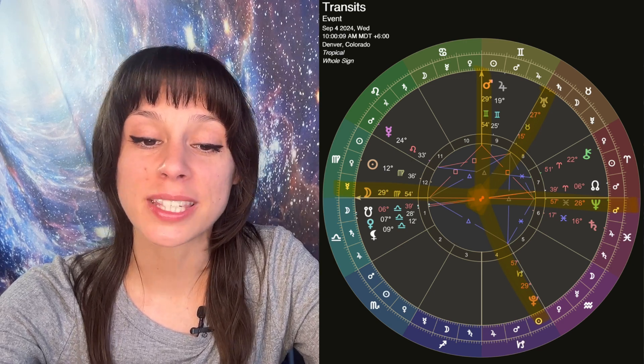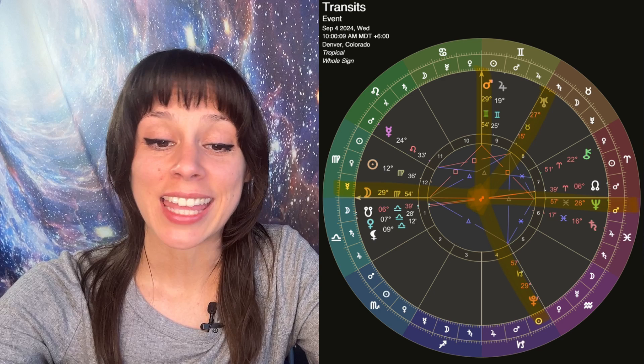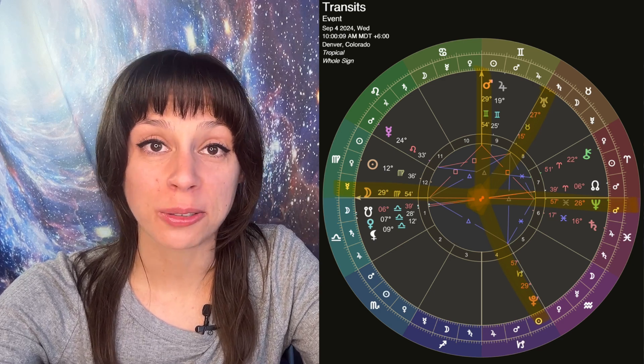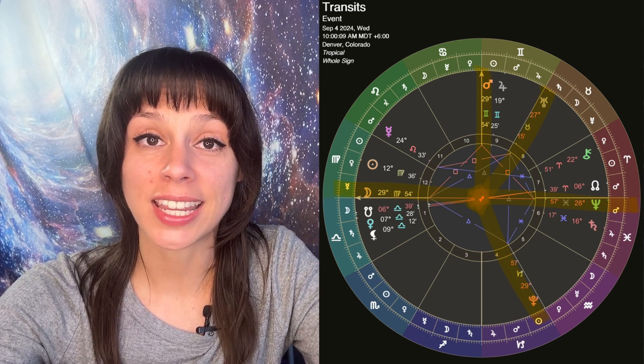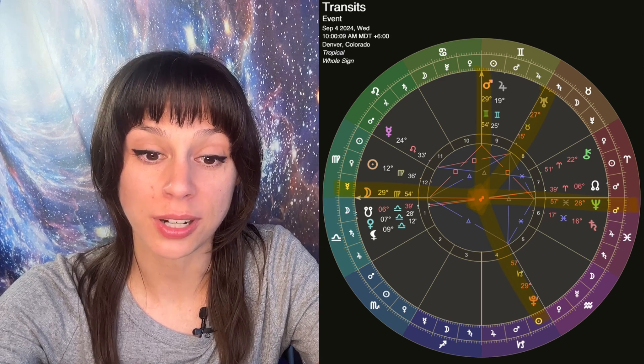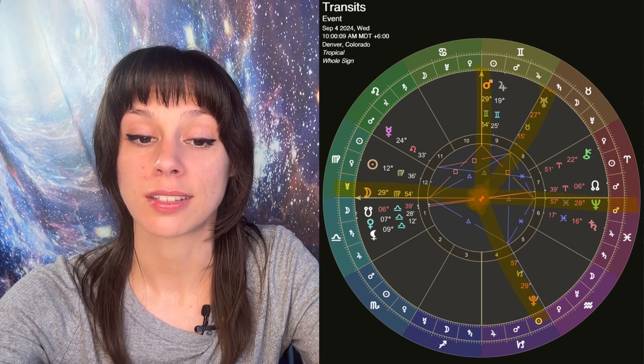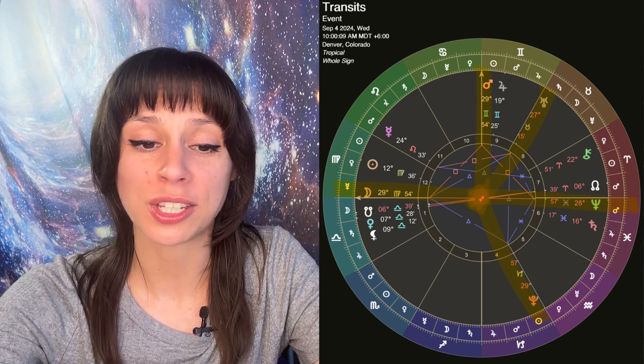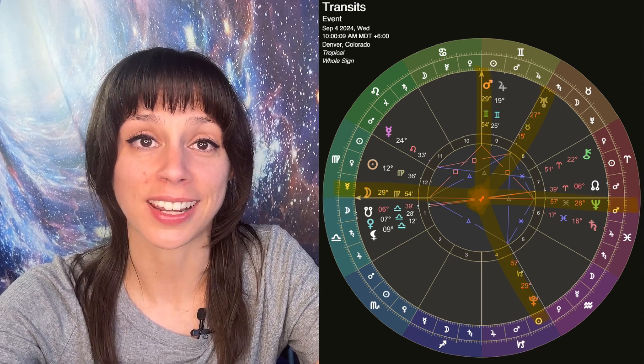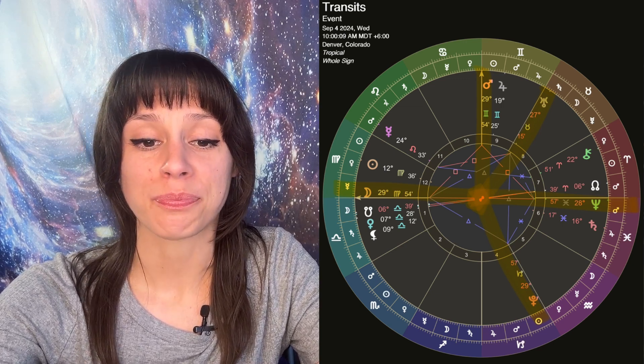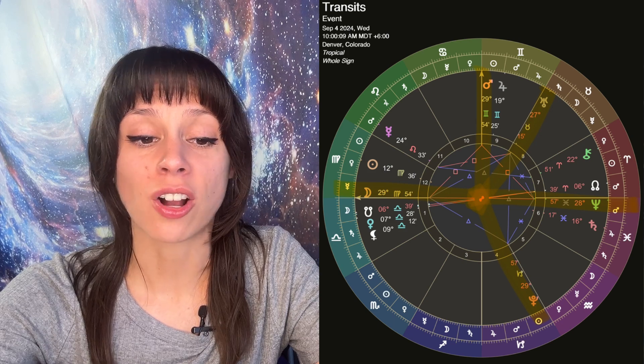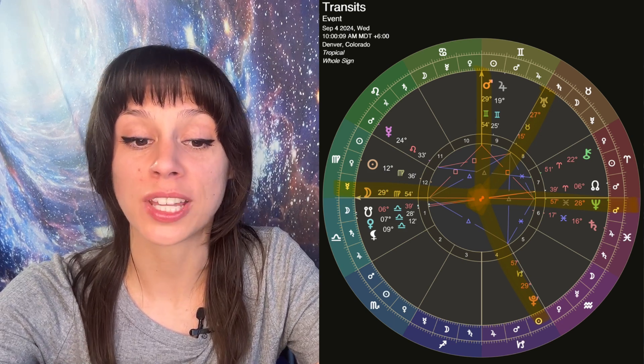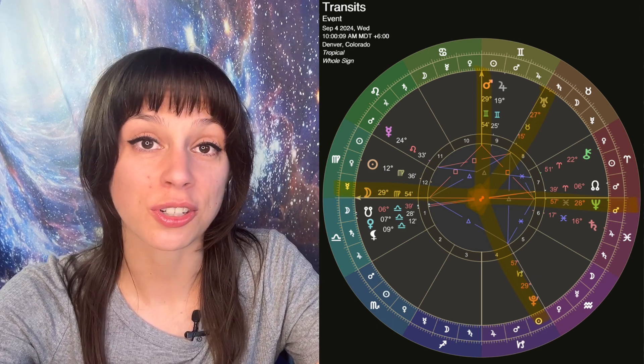If you have any placements at those last degrees of Virgo, you are getting hit right now by three outer planets moving retrograde and Mars. So Wednesday, just know that you are getting hit from quite a few different angles. And then also on Wednesday, the moon will enter Libra and Mars will enter Cancer.